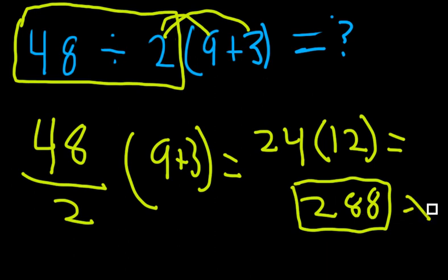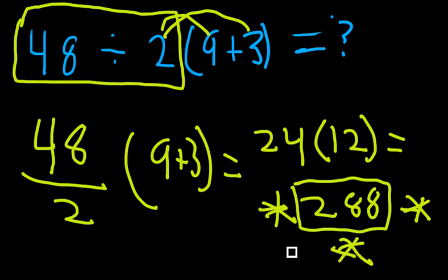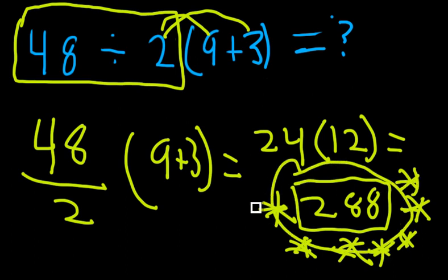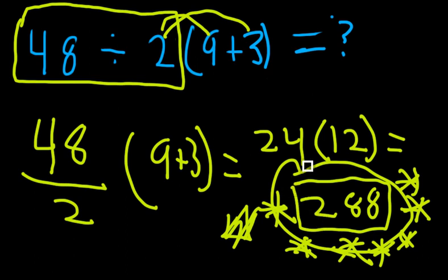Now, that is our correct answer, which I'll throw a bunch of stars around and circle — I'll put a triangle here for good measure, though it looks like a delta. Ignore that. But 288 is our answer. Thank you.